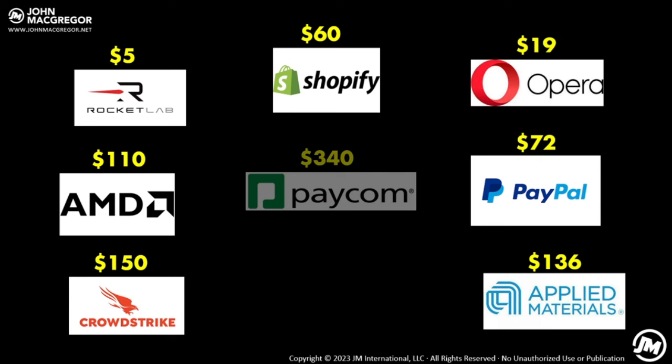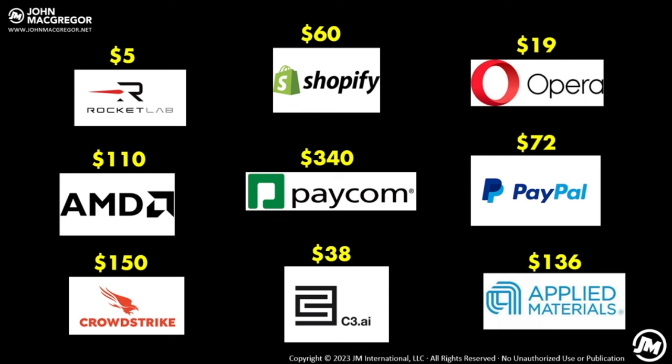Here are a few stocks I've used quite effectively — though this is not a recommendation. You can see Rocket Lab at $5 per share, requiring a $500 investment, all the way to Paycom at $340 per share, requiring $34,000. C3.ai, an artificial intelligence stock, was paying over 6% in cash for a two-week contract. My average stock price is probably around $120 to $130 per share, which means about $12,000 — but you can do this for much less.